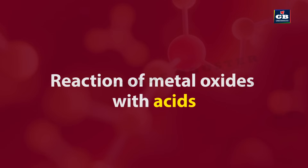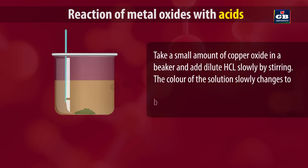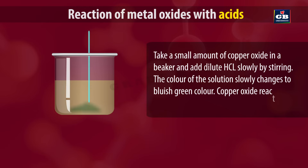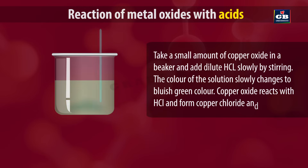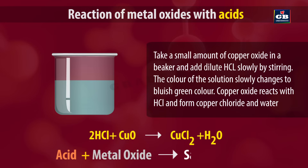Reaction of metal oxides with acids. Take a small amount of copper oxide in a beaker and add dilute HCl slowly by stirring. The color of the solution slowly changes to bluish green. Copper oxide reacts with HCl and forms copper chloride and water. So when a metal oxide reacts with acid, it forms salt plus water.